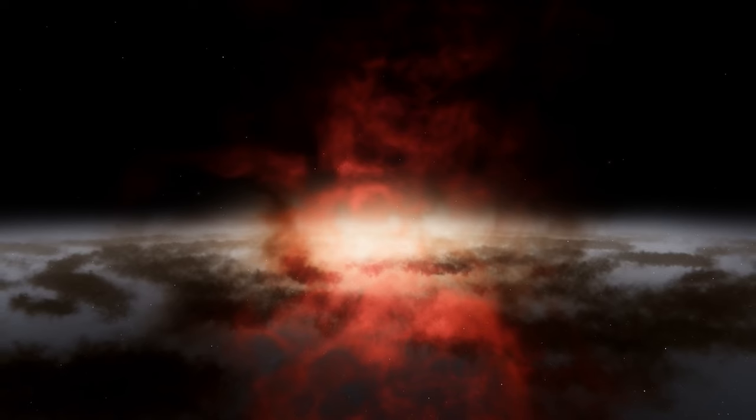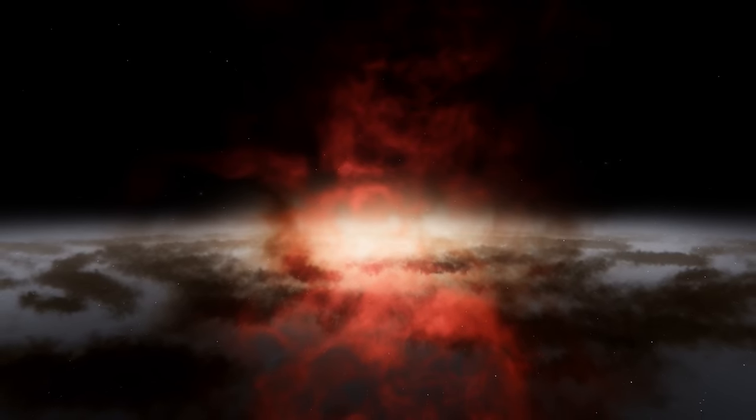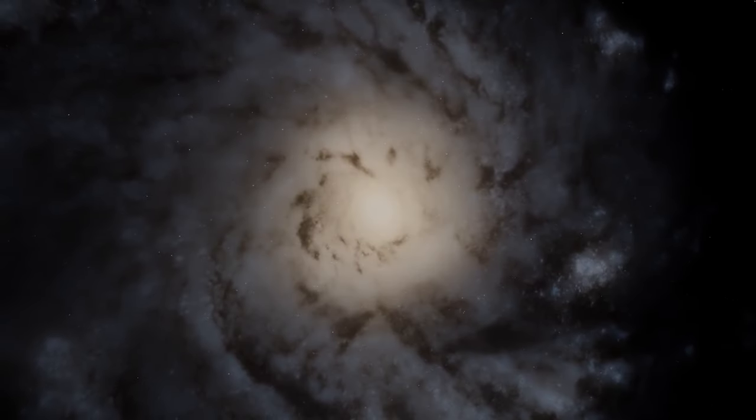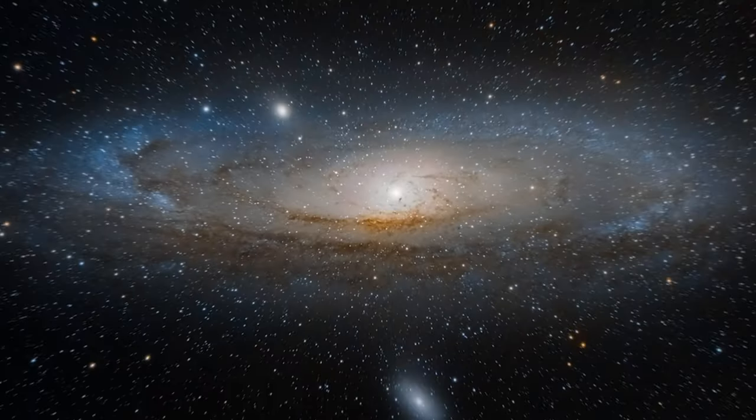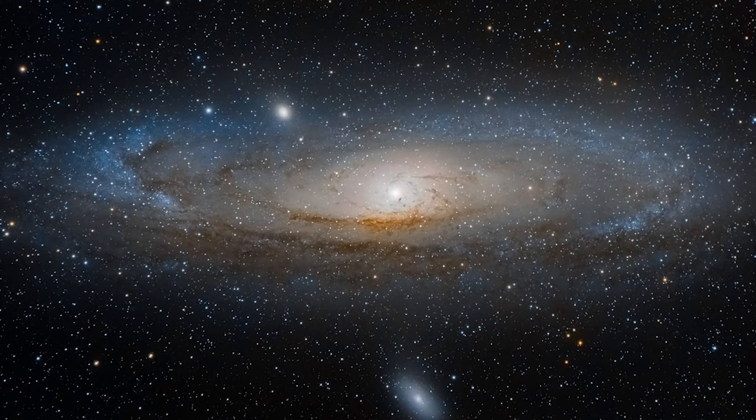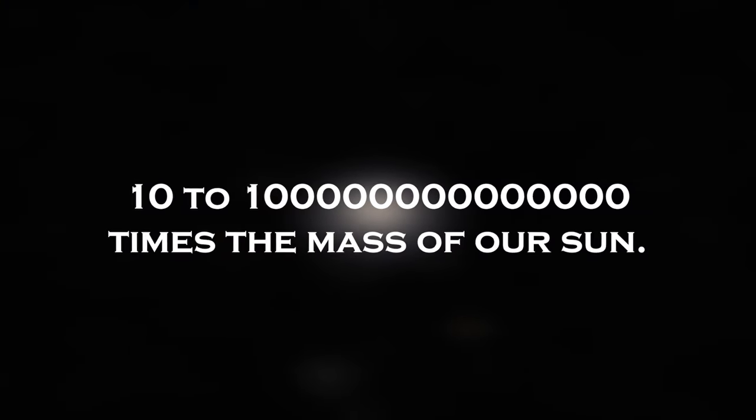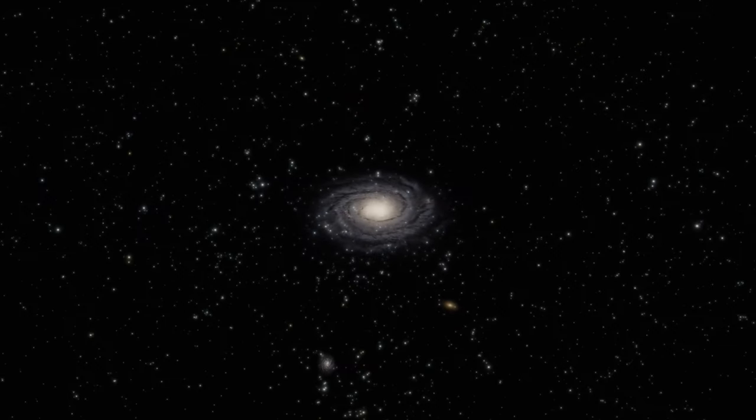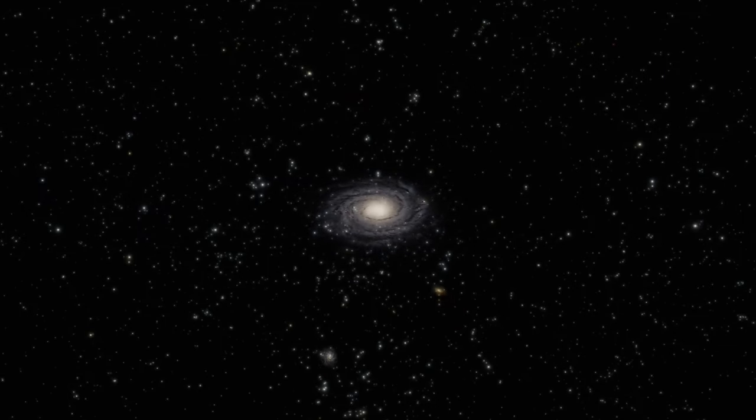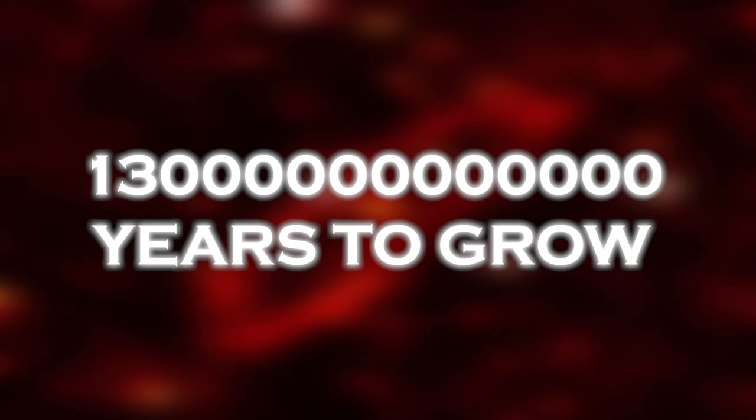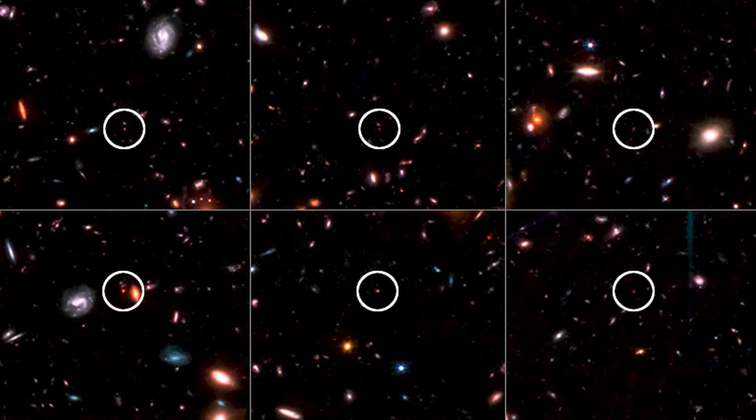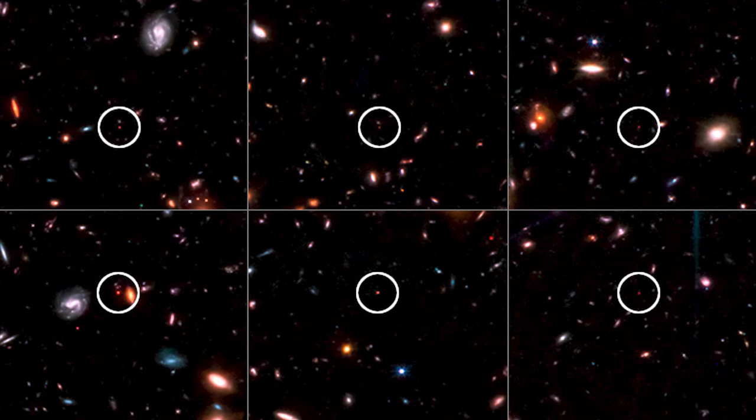Using stellar evolution models, the scientists calculated how many stars each of these galaxies would need to emit all their light. They found that the stellar masses of these six galaxies range from 10 to 100 billion times the mass of our Sun. This is comparable to or even greater than the mass of our own Milky Way galaxy, which contains approximately 60 billion stars and has had more than 13 billion years to grow.